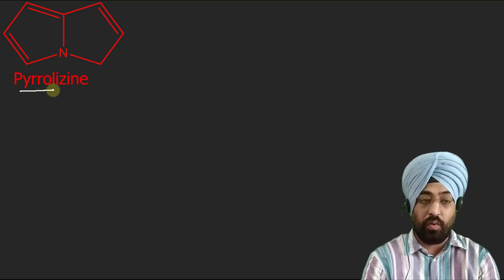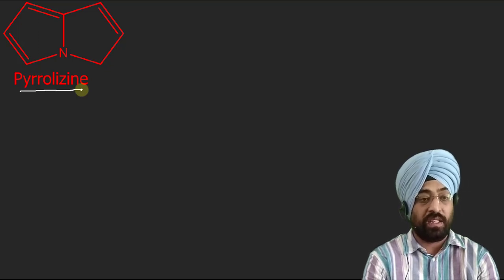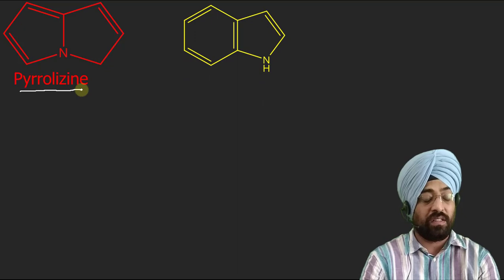Next, in this compound two rings are fused. Such compounds are called fused heterocycles. In this compound two five-membered rings are fused and nitrogen is common between the two rings. Its name is pyrrolizine. We will also learn how to name them systematically under fusion nomenclature in our next lecture, but its trivial name is pyrrolizine.